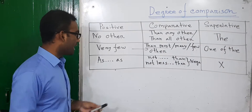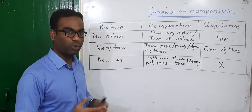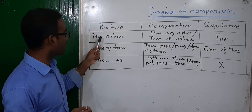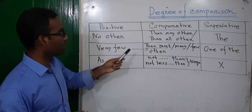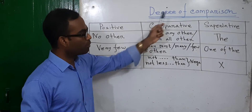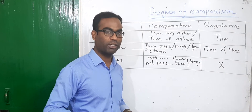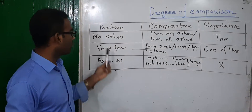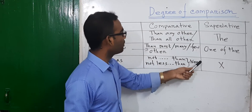So we have three categories. The first one is 'no other', then 'any other', then 'all other', even superlative. Because there is 'no other', 'very few', then 'most other', 'few other', 'one of the'.